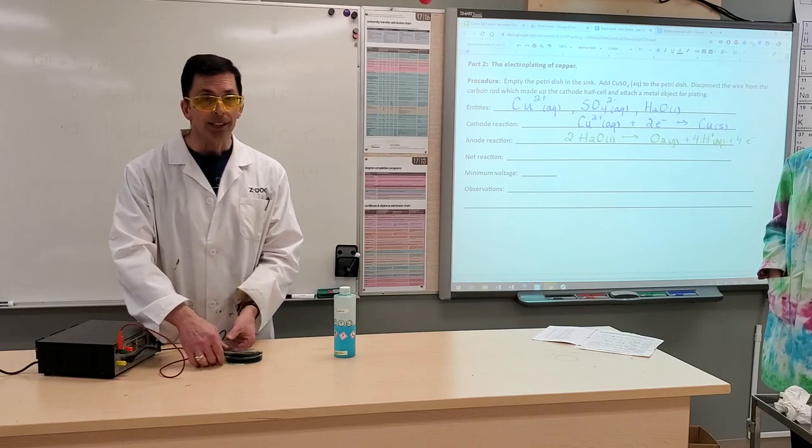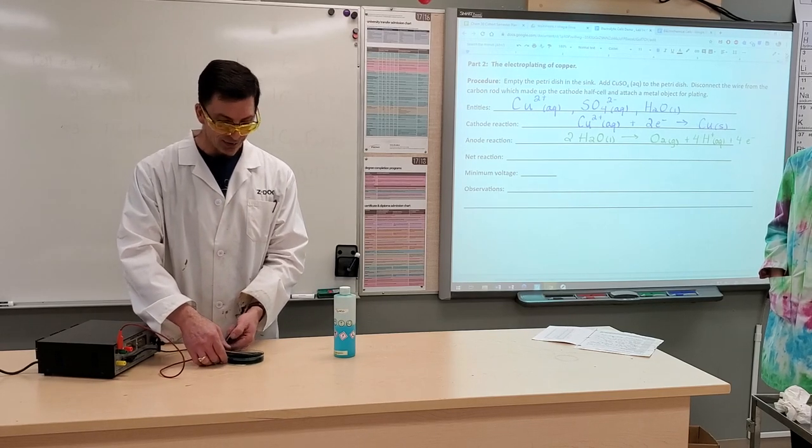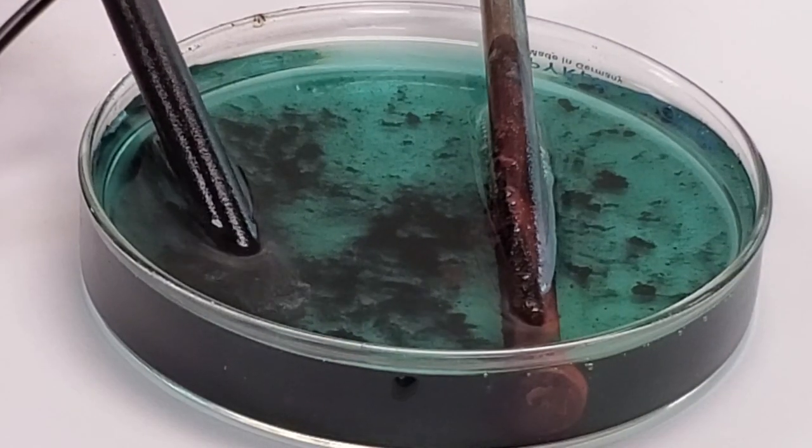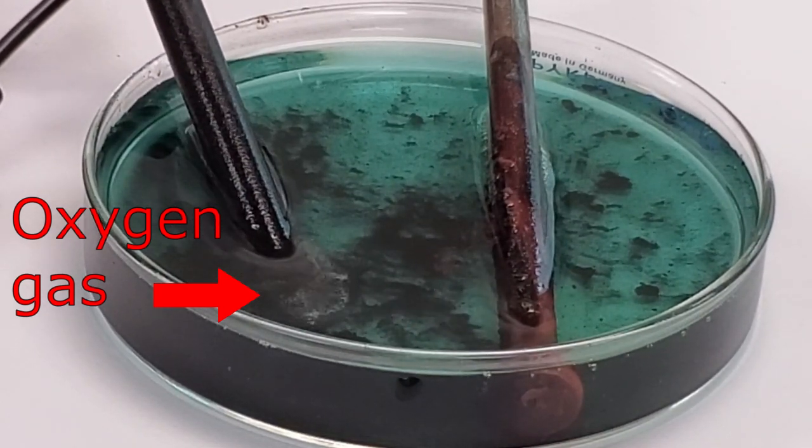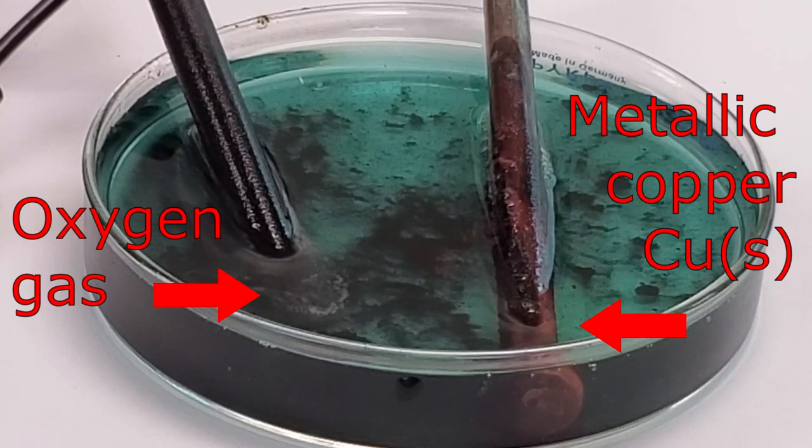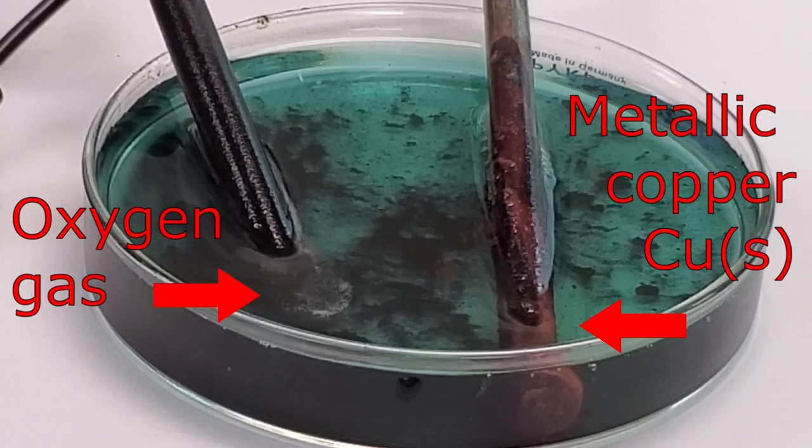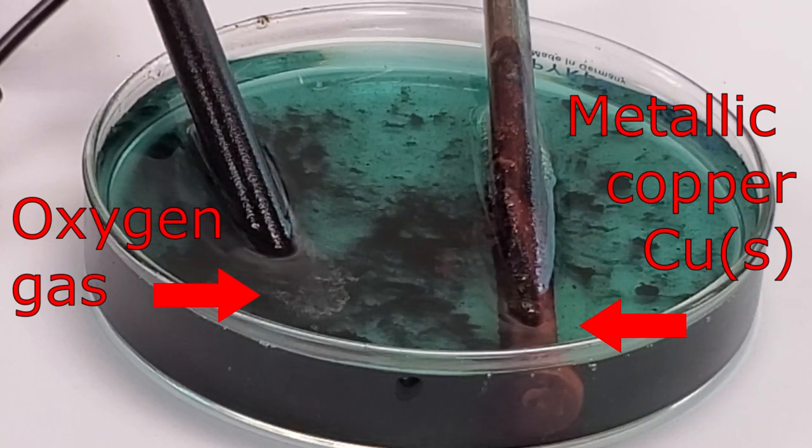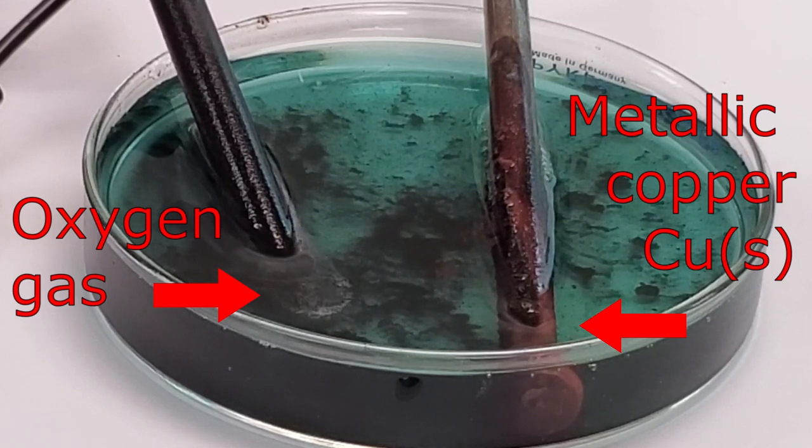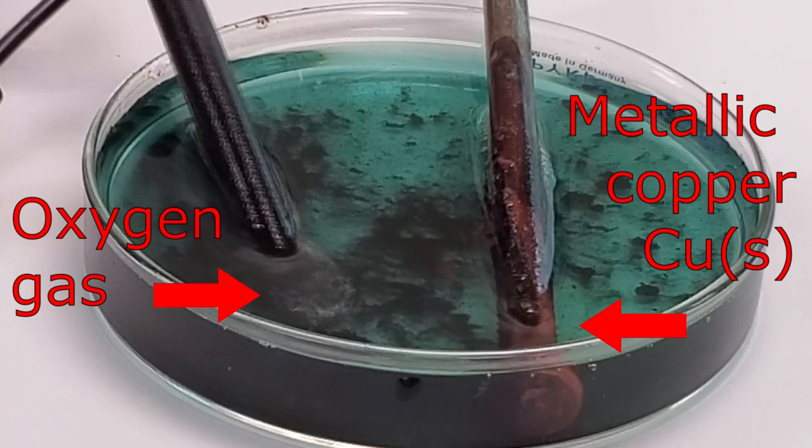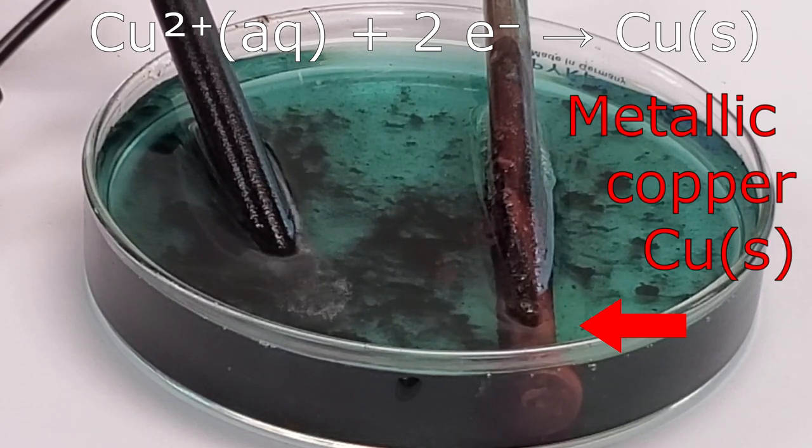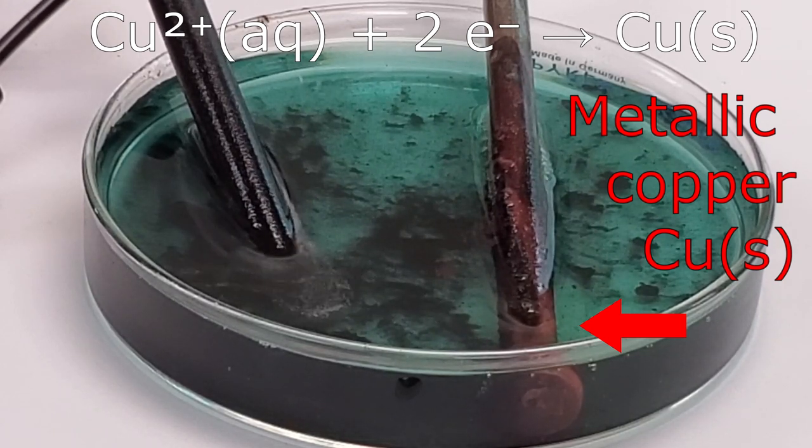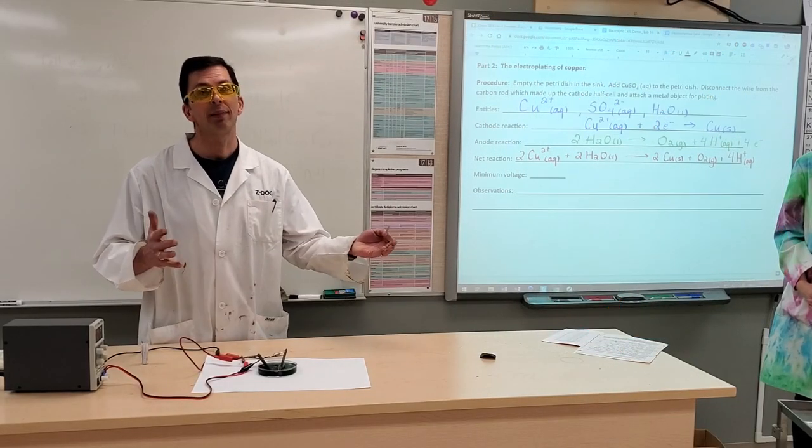Looking at the cell, just in terms of analysis, we have some gas bubbles that are produced around our carbon anode. We have copper plating. Copper metal has been plated out onto our cathode. So the copper ions have been reduced into copper atoms as illustrated by the cathode half reaction.